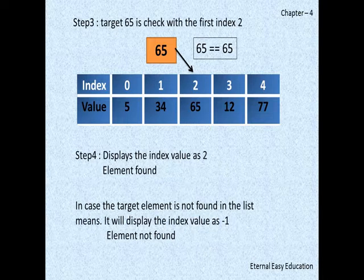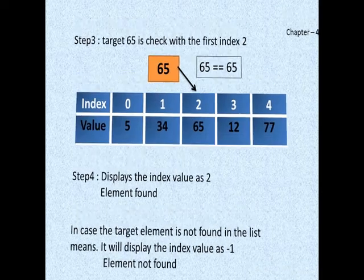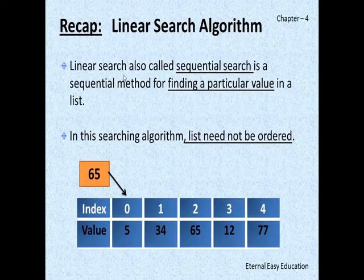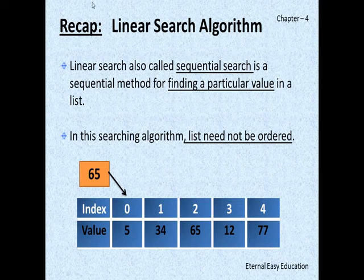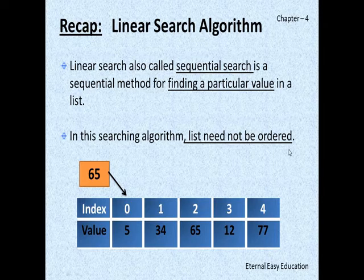So the recap: Linear search, also called sequential search, is a sequential method for finding a particular value in a list. The list need not be ordered.